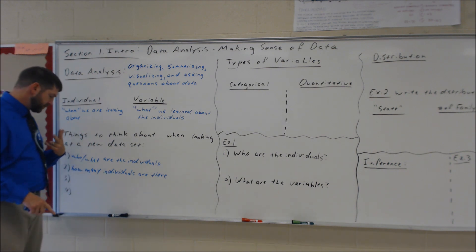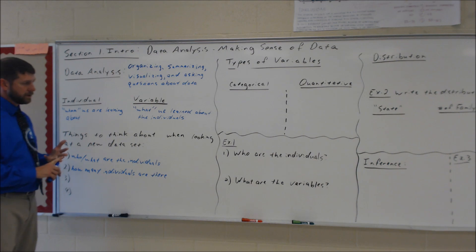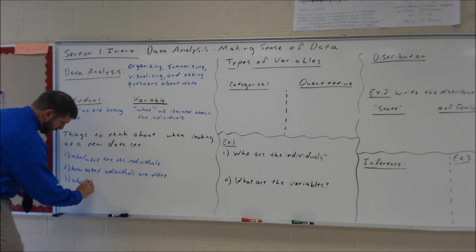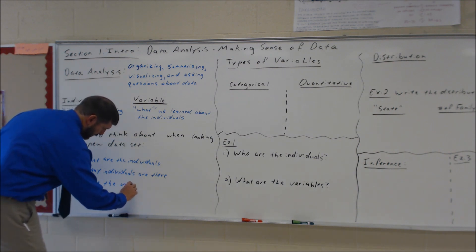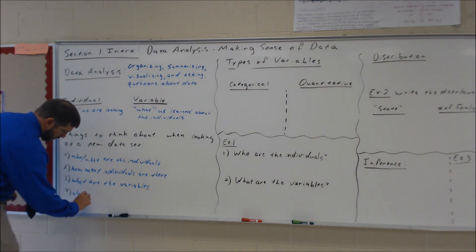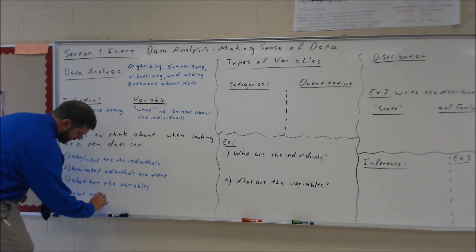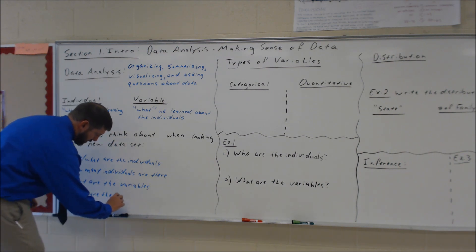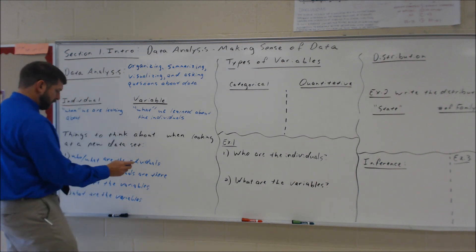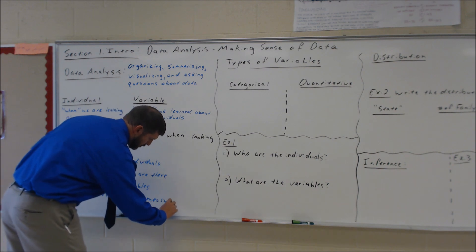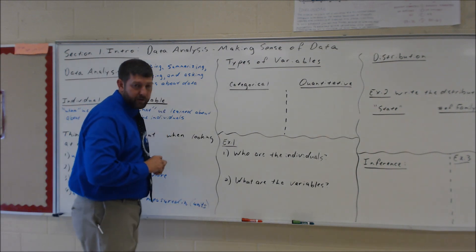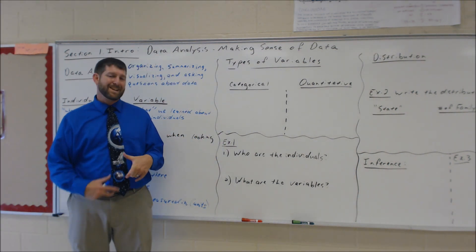Once we know who the individuals are and how many we have, the next thing we need to know is: what are the variables — what information did we gather about these individuals? And very important — what are the units of measure? What are the variables measured in? Knowing what they're measured in may give me an idea of what type of variable it is.